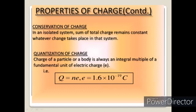Next is quantization of charge. The charge of a particle or a body is always an integral multiple of the fundamental unit of electric charge. The fundamental unit of electric charge is the charge of an electron, that is 1.6 × 10⁻¹⁹ coulomb, where coulomb is the unit of charge. The charge of any object is represented by Q = ne, where n is an integral number taking values ±1, ±2, etc.